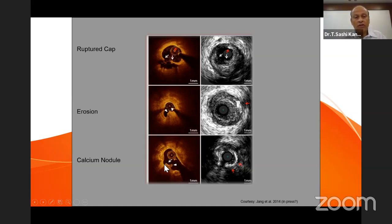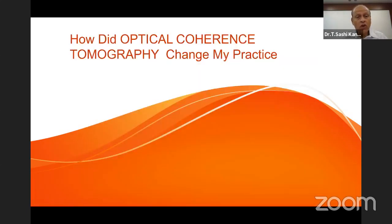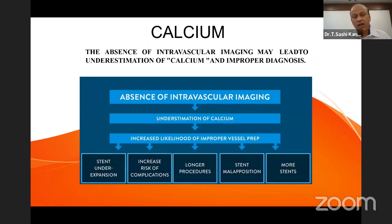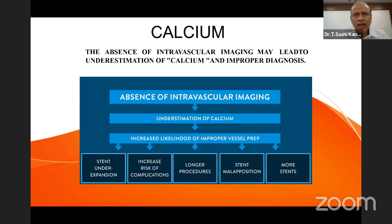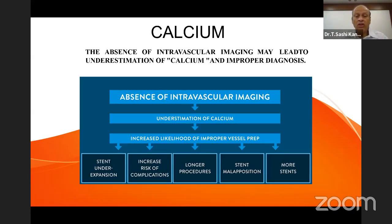How did optical coherence tomography change my practice? In the assessment of intracoronary calcium: in earlier days, any patient with severe triple vessel disease and significant calcium was sent for bypass surgery, because angiography is not a good tool to assess calcium severity. Today we have a tool to assess calcium very well — understanding its distribution — and thereby decide the stenting strategy with or without plaque modification using rotablation, a scoring balloon, a cutting balloon, or intravascular lithotripsy.